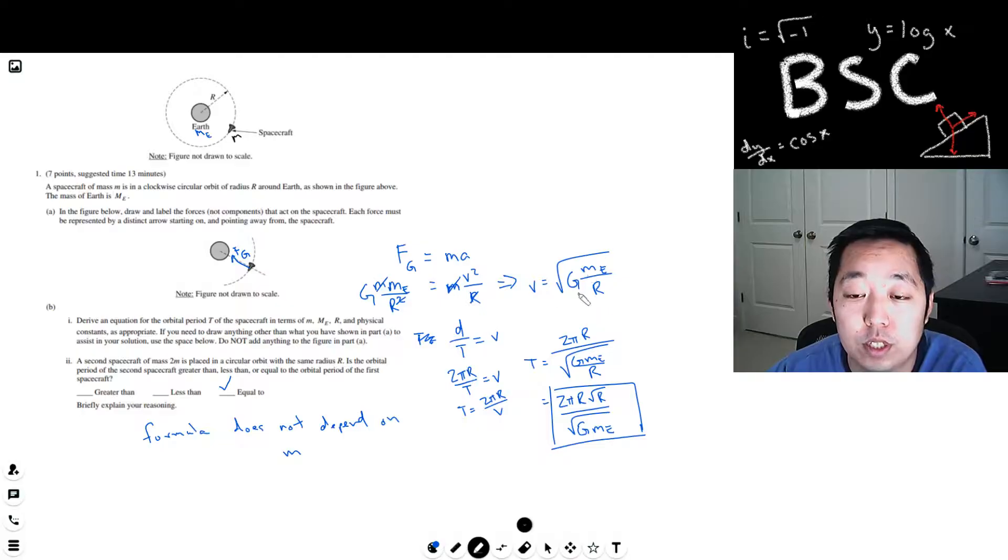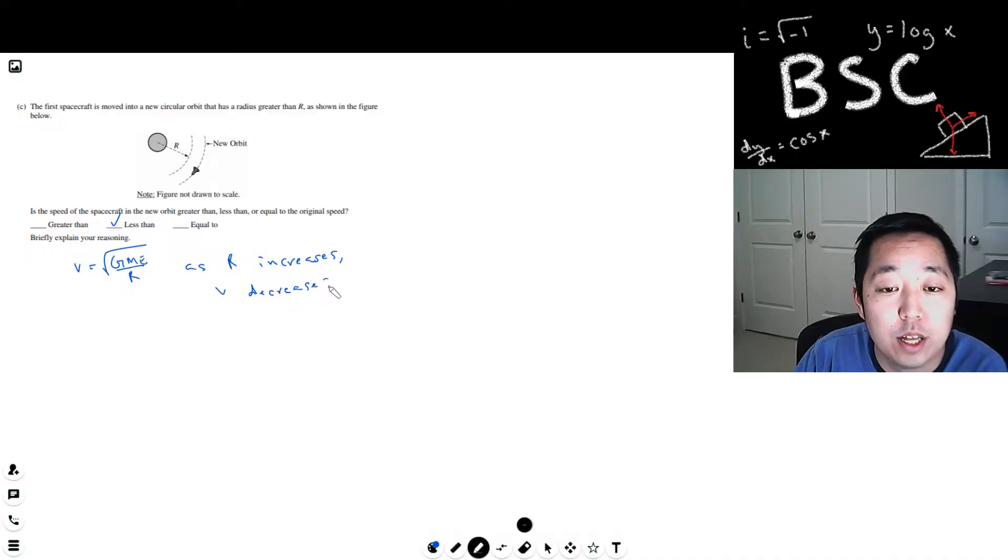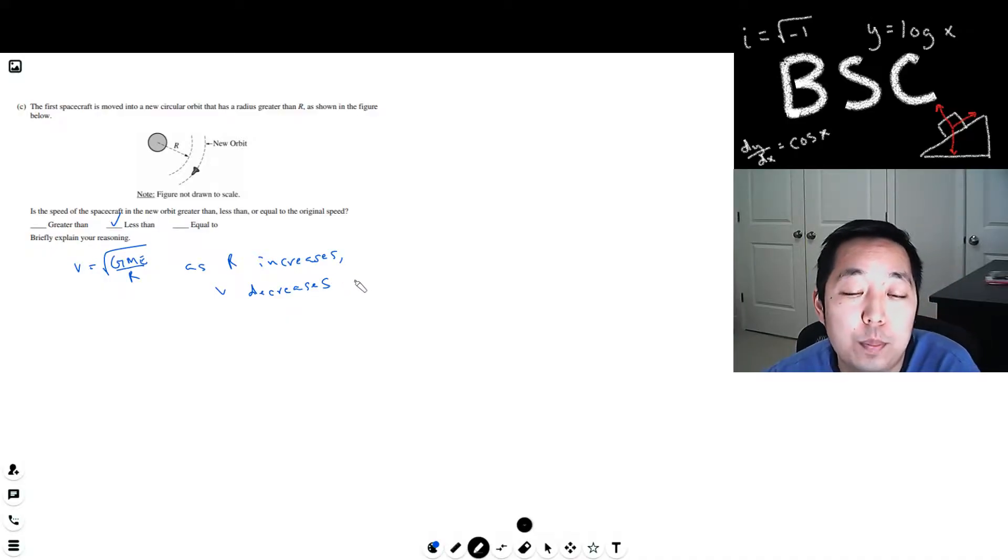Okay, so when R goes up, V goes down, right, because R is on the denominator here. So less than. Since V is equal to square root of GME over R, as R increases, V decreases. I don't know what explanation they want other than the formula says so, but that would be what I would do.